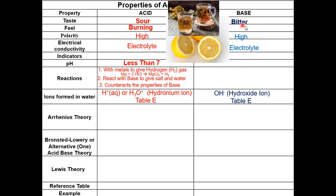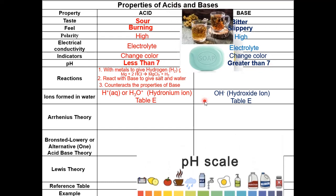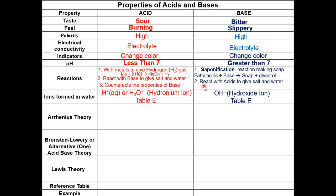A base, on the other hand, tastes bitter, has a slippery feeling, and has a pH greater than 7. Both acids and bases change color in the presence of an indicator. Bases can perform saponification, which is a reaction that makes soap — we will discuss this later in the Organic Chemistry unit. Base can react with acids to give salt and water, and base counteracts the properties of an acid.